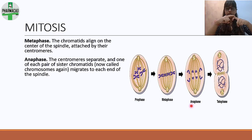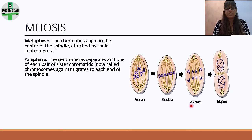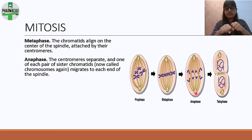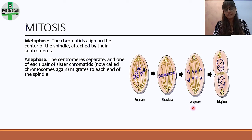In anaphase, the centromeres separate and one of each pair of chromatids migrates to each end of the spindle. You can see half the chromosomes moving to one side and the other half moving to the other side.